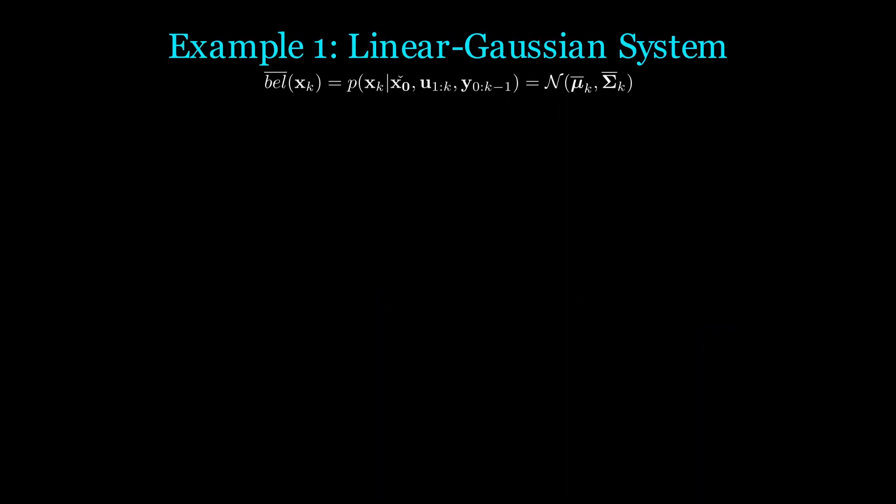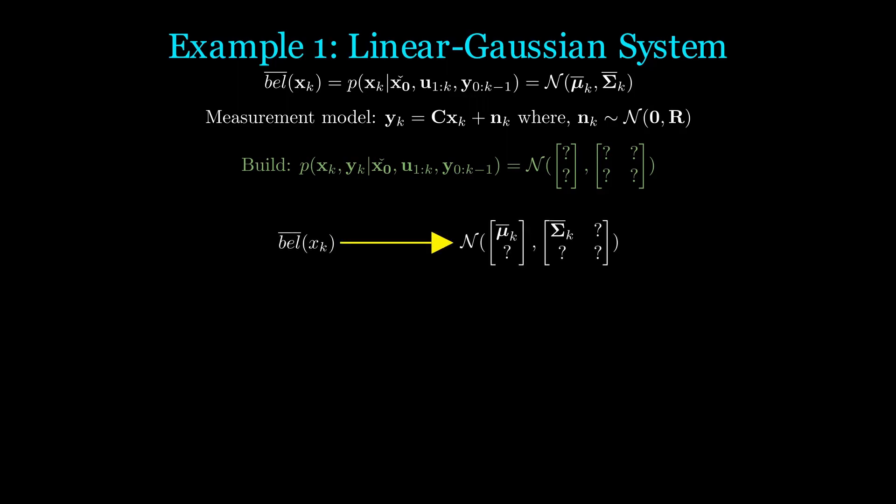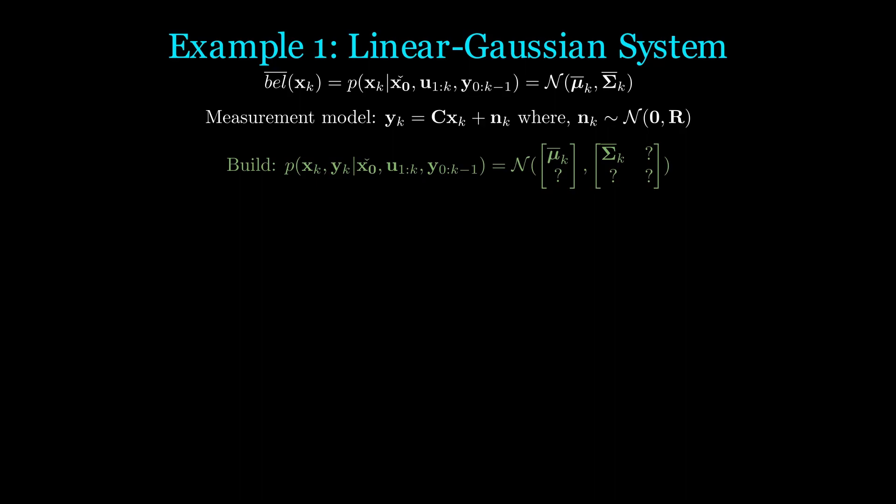Let's work through an example now. Let's say we already have a Gaussian prediction step and our measurement model is linear and n_k is Gaussian with zero mean and covariance R. Let's build this joint Gaussian together. First, from bel̄(X_k), we can fill in the quantities for P(x|stuff). I will use the word 'stuff' to refer to the prior, previous actions and measurements.